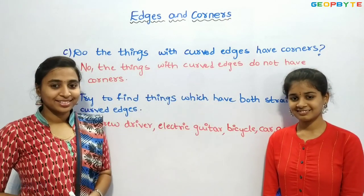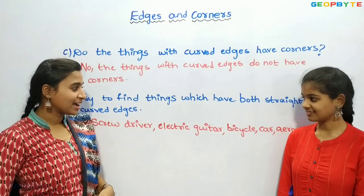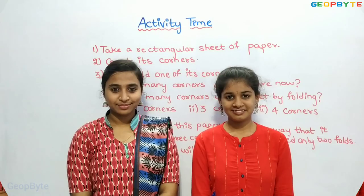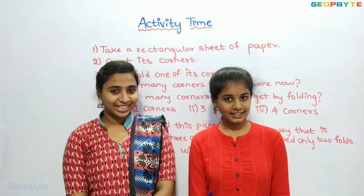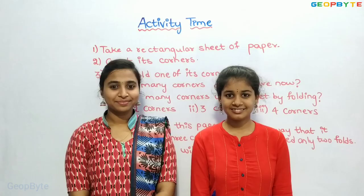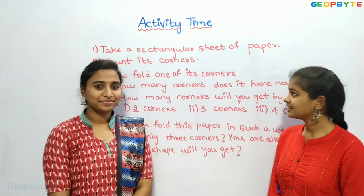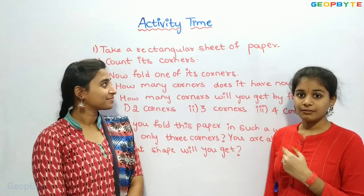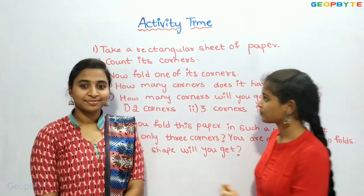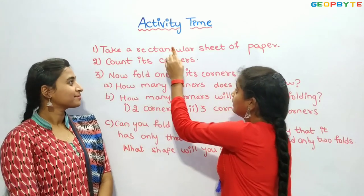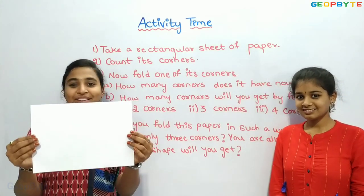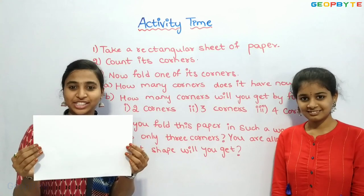These things will have both straight and curved edges. Now it is activity time. Hey kids! We have an activity. Take a rectangular sheet of paper. Yes, we have taken a rectangular sheet of paper.